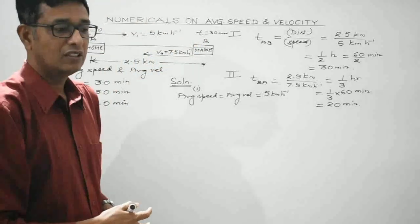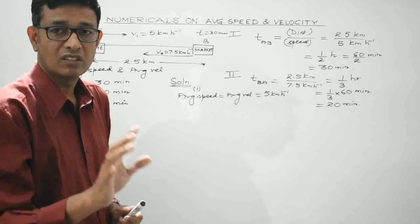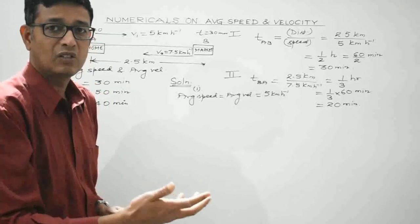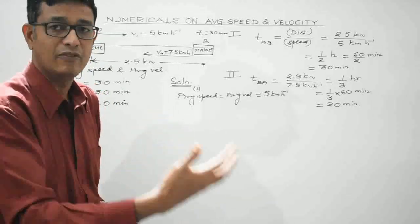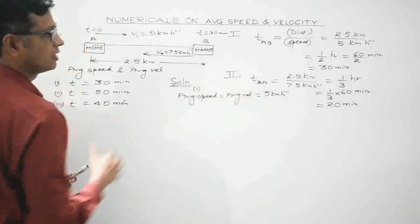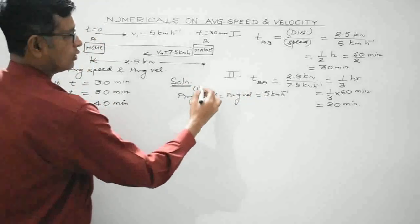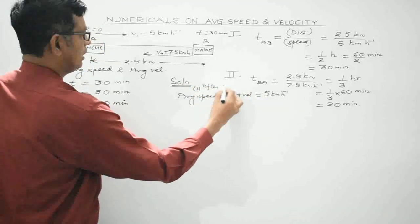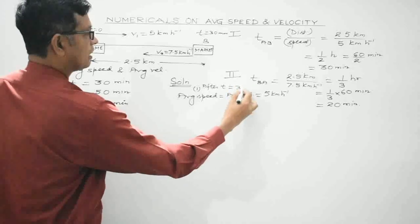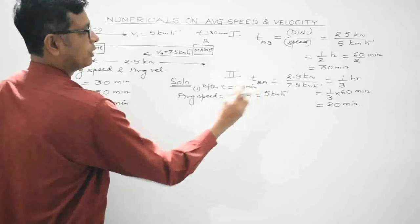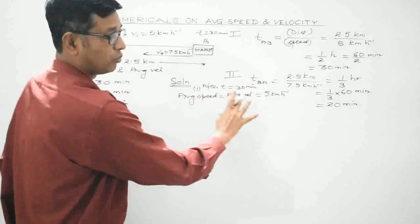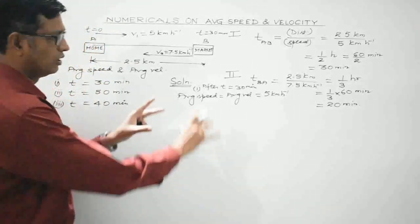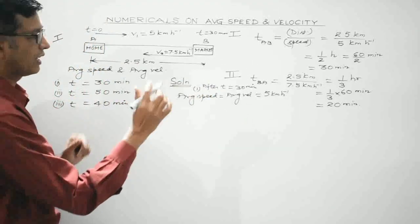Whenever speed is constant, the instantaneous speed equals the average speed. So after t = 30 minutes, average speed and average velocity are both equal to 5 km per hour — no calculation needed.